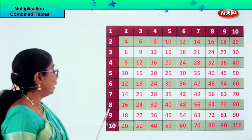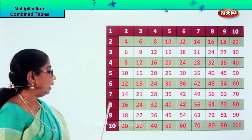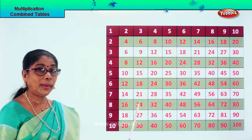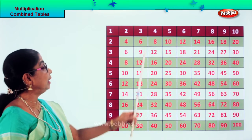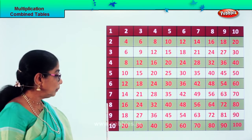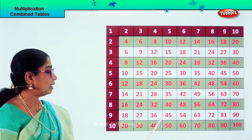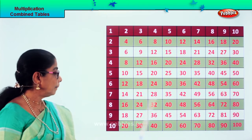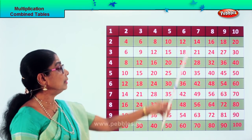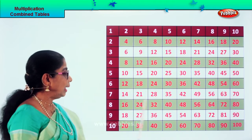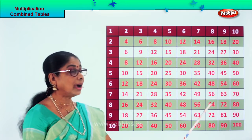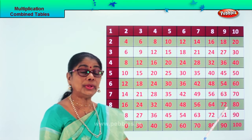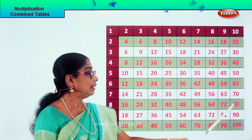Let's take it this way now: eight ones are eight, eight twos are sixteen, eight threes are twenty-four, eight fours are thirty-two, eight fives are forty, eight sixes are forty-eight, eight sevens are fifty-six, eight eights are sixty-four, eight nines are seventy-two, and eight tens are eighty.